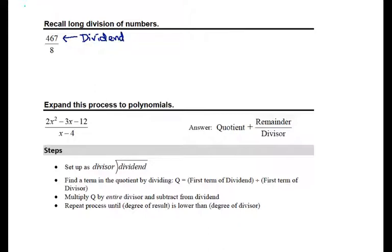The number that we are dividing by is referred to as the divisor. So if we set this up in a division bracket with the divisor on the outside and the dividend on the inside, we don't look at the whole dividend. We start